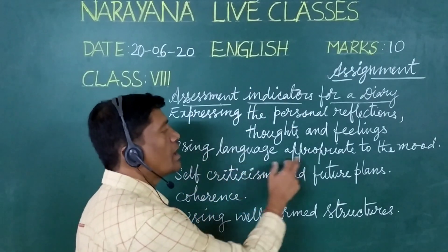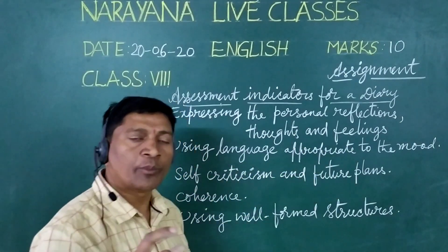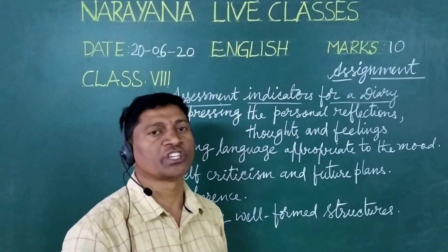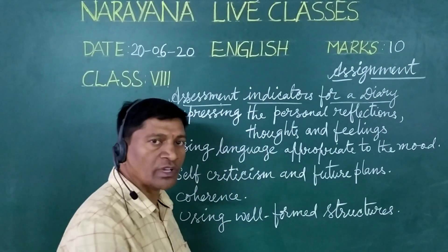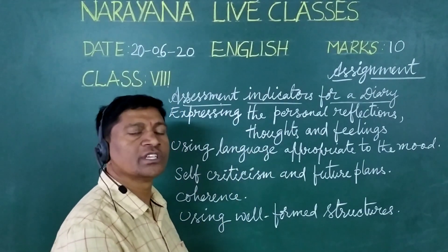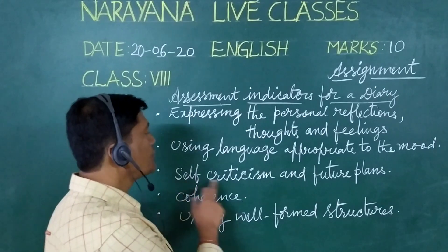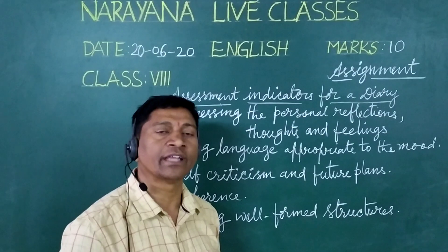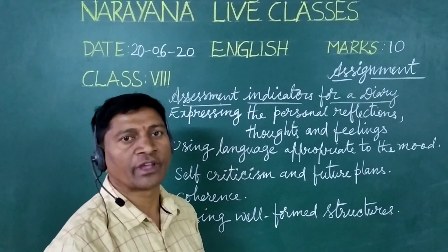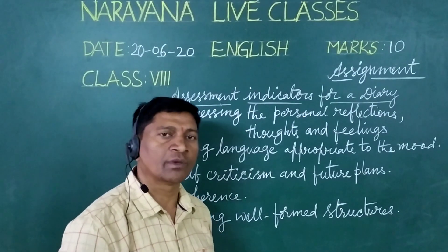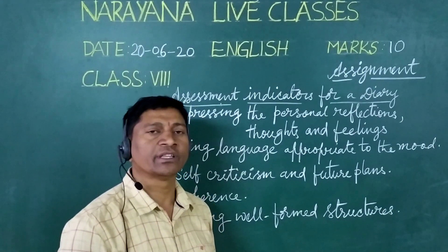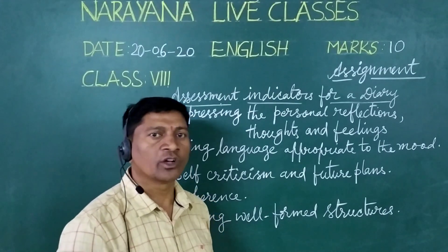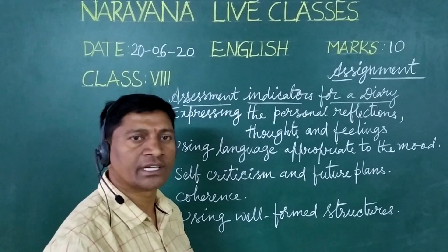Next is using language appropriate to the mood — appropriate to the given statement or given question. According to that we have to write the correct language. Appropriate language means correct usage of tenses and everything. Self-criticism and future plans — if you have done wrong, you have to criticize yourself, realize yourself, and write future plans too. Remember, when writing a diary entry, you can write the simple present, simple past, and simple future. So three tenses can be applicable for this diary entry.